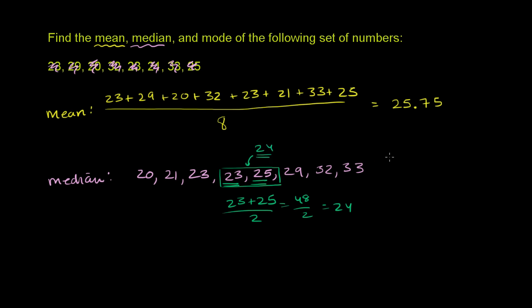So once again, this is one way of thinking about central tendency. If you wanted a number that could somehow represent the middle—and I want to be clear, there's no one way of doing it. This is one way of measuring the middle if you had to represent this data with one number. And this is another way of representing the middle.